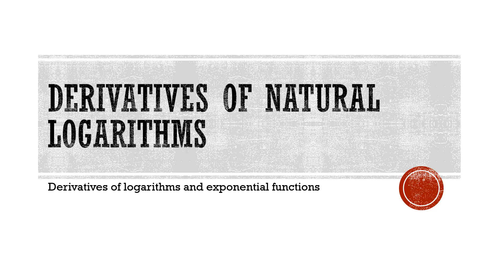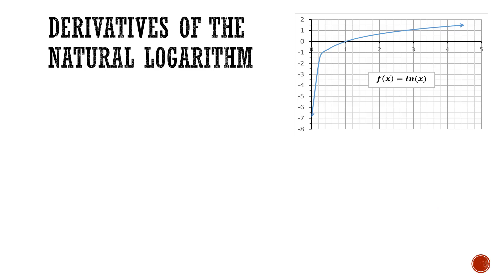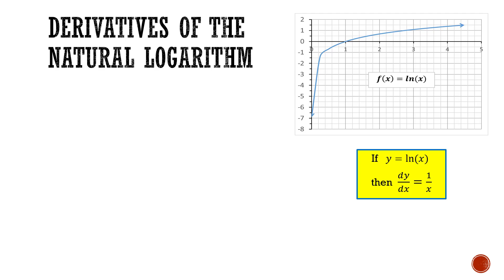In this video I'm going to show how to do derivatives of natural logarithms. In the top right I have a graph of the function f of x equals ln of x. The derivative rule for ln of x is: if y equals ln of x, then dy/dx equals 1 over x. So for f of x equals ln of x, the derivative f prime of x will be 1 over x.